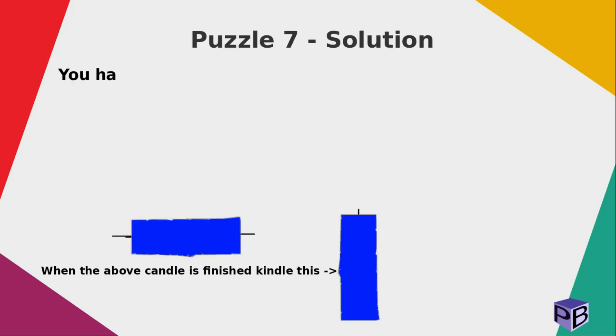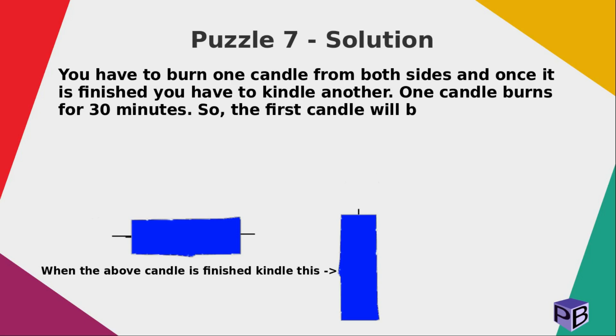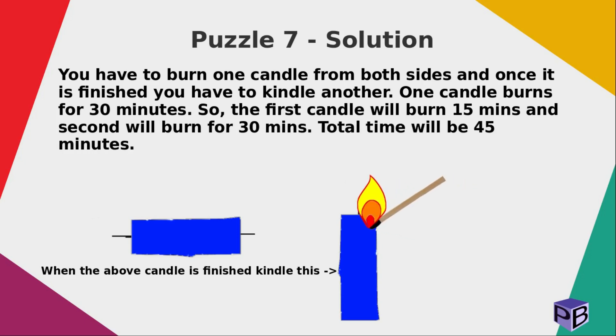You have to burn one candle from both sides and once it is finished, you have to kindle another. One candle burns for 30 minutes. So, the first candle will burn in 15 minutes and the second will burn for 30 minutes. So, the total time will be 45 minutes.